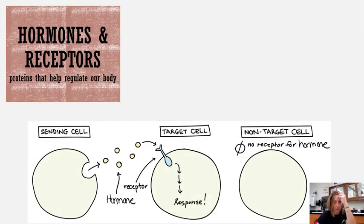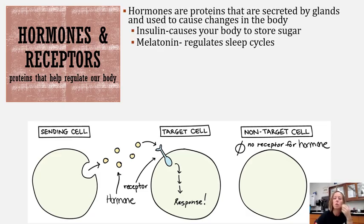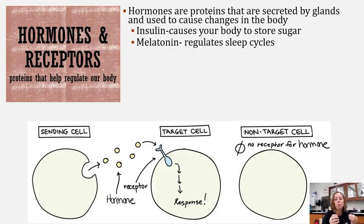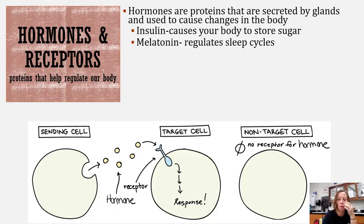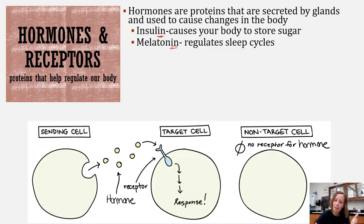The first of our three types of proteins are hormones and receptors — proteins that help us regulate our bodies. Hormones are secreted by our body and are responsible for changes that happen in your body. For example, insulin causes your body to store sugar, and melatonin causes you to sleep or wake up. Notice that both of these end in -IN, and lots of proteins end in -IN. Your body makes them and they're chemicals that help regulate — they work with the nervous system to regulate the processes in the body.